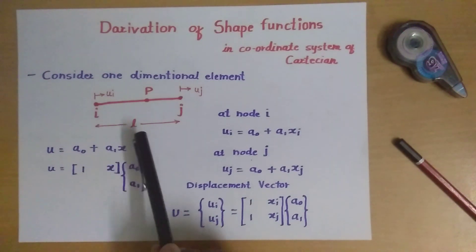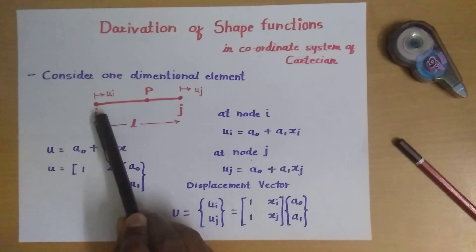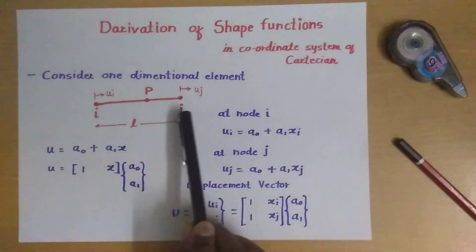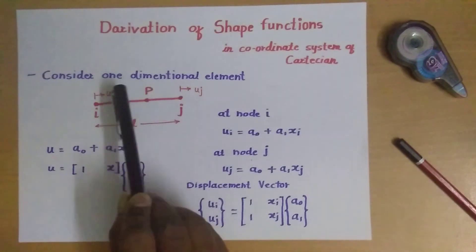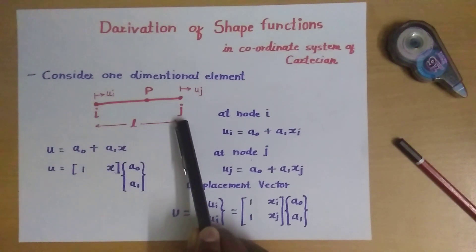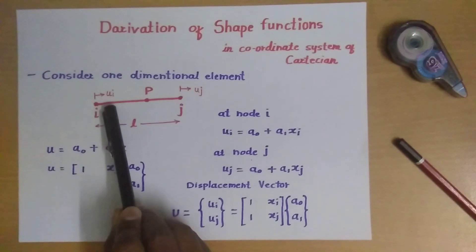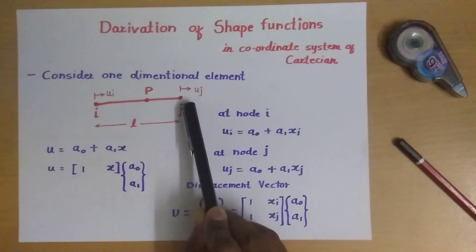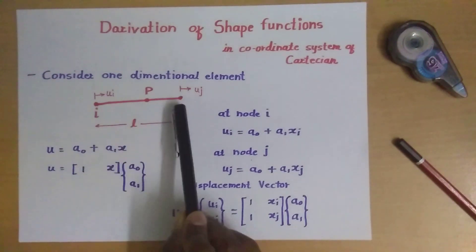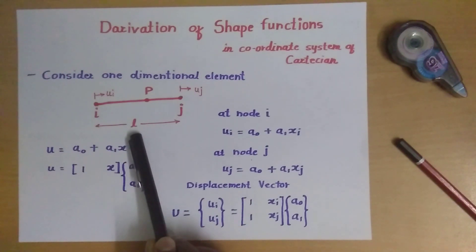Consider a one-dimensional element. This element is part of a system of elements, and we have considered any one element from that system which has node i and node j. For node i, the deformation is ui, and for node j, the deformation is uj. The length between the two nodes is called the element length, denoted by small l.